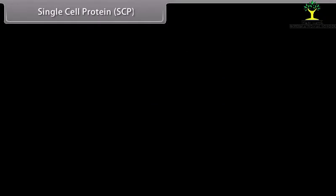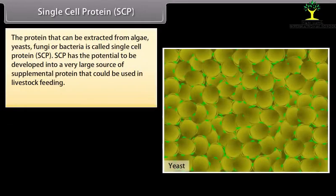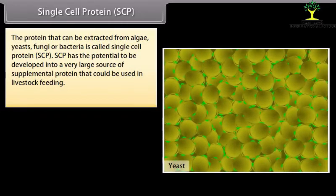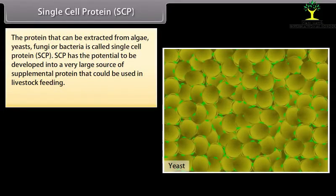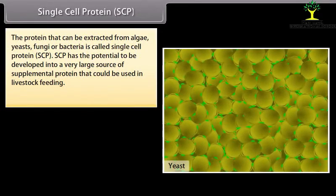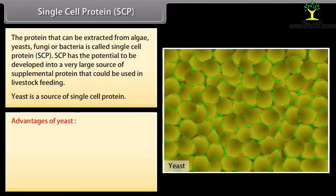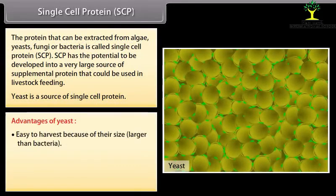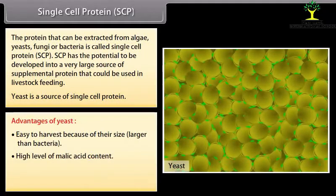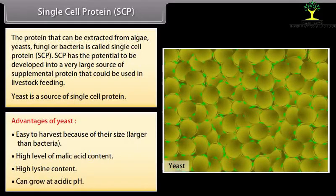Single Cell Protein (SCP): The protein that can be extracted from algae, yeasts, fungi, or bacteria is called single cell protein (SCP). SCP has the potential to be developed into a very large source of supplemental protein that could be used in livestock feeding. Yeast is a source of single cell protein. Advantages of yeast include: easy to harvest due to their larger size compared to bacteria, high level of malic acid content, high lysine content, and ability to grow at acidic pH.